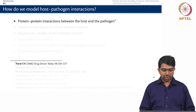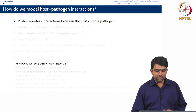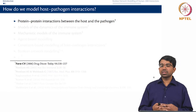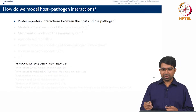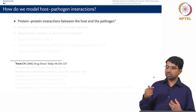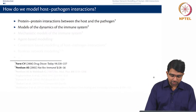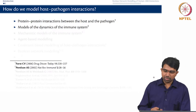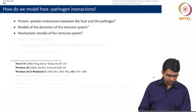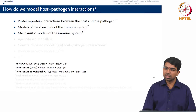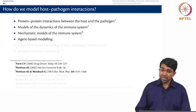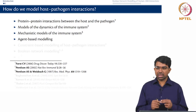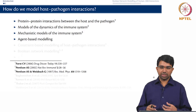So how do we model host-pathogen interactions? There are people who have studied protein-protein interactions between the host and the pathogen. There is a protein interaction network in the host, there is a protein interaction network in the pathogen, and there are some interactions that cross over across the boundaries between organisms. There are also very nice models of the dynamics of the immune system itself — this is somewhat similar to SIR models — using differential equation-based modeling of immune system dynamics. Similarly, mechanistic models of the immune system covering various cells such as B cells and T cells. Agent-based modeling is again a very powerful methodology for studying these kinds of systems.